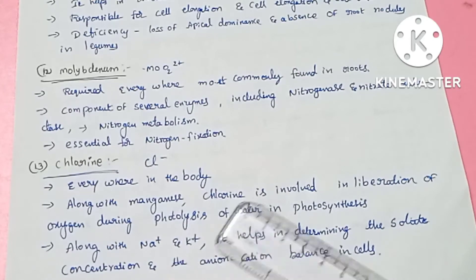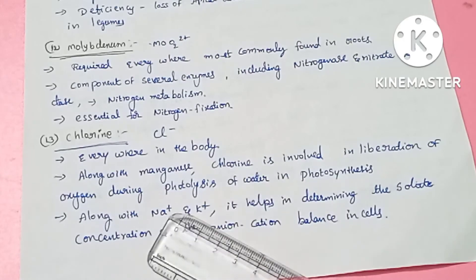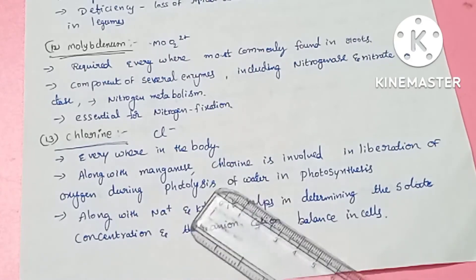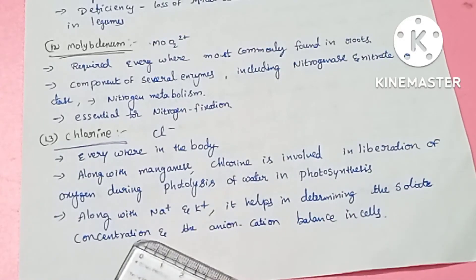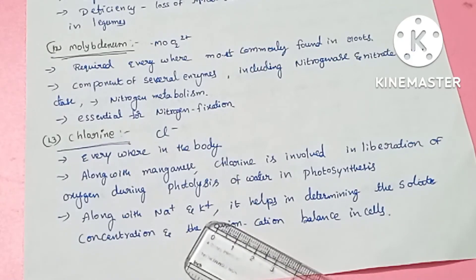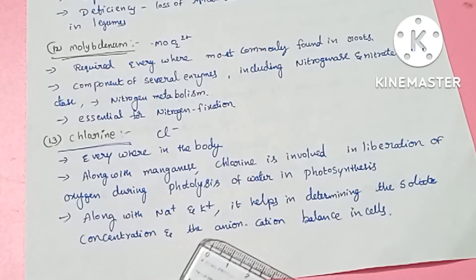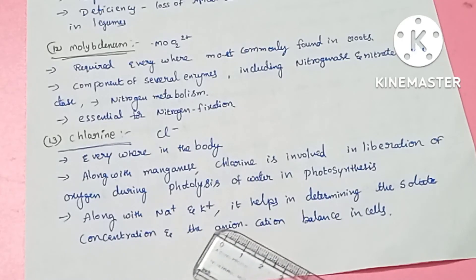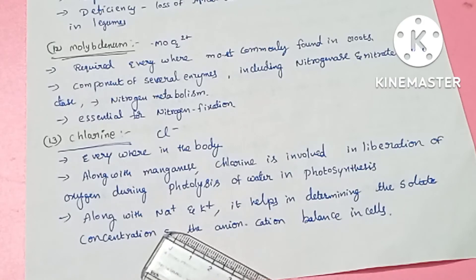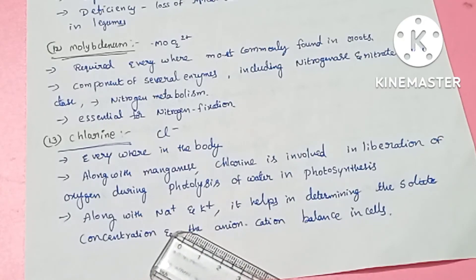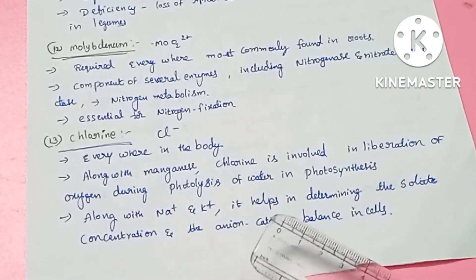The photolysis of water involves oxygen liberation. Manganese and chlorine ions together are involved in this process. Chlorine ions also help balance the solute concentration by balancing sodium and potassium levels.